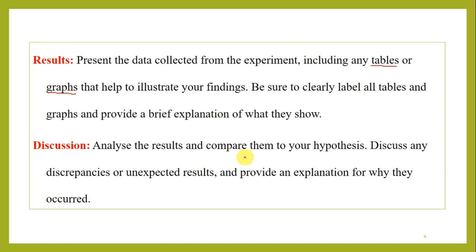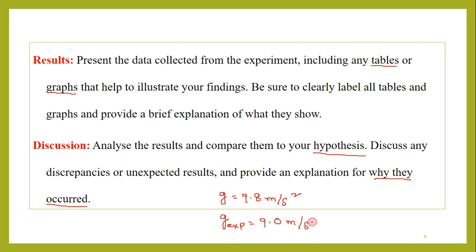Then discussion. Whatever results we get, we have to analyze them by comparing with our hypothesis — our pre-assumptions. We assume that the value of something will come in a certain range. If any deviation or unexpected results come into picture, we have to provide the reason for it. For example, we are calculating acceleration due to gravity; we already know it is 9.8 m/s². But when we do it experimentally, this value came out as 9.0 m/s². There is a deviation from the standard value, so we have to explain whether it is due to apparatus, local conditions, or approximations in our calculations or measurements.